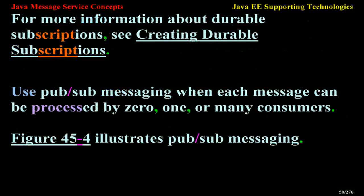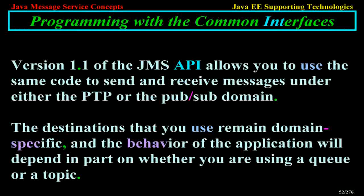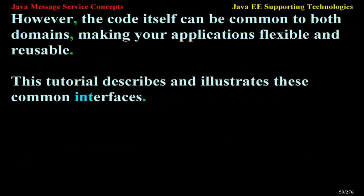Use pub-sub messaging when each message can be processed by 0, 1, or many consumers. Programming with the Common Interfaces. Version 1.1 of the JMS API allows you to use the same code to send and receive messages under either the PTP or the pub-sub domain. The destinations you use remain domain-specific, and the behavior of the application will depend in part on whether you are using a queue or a topic. However, the code itself can be common to both domains, making your applications flexible and reusable.